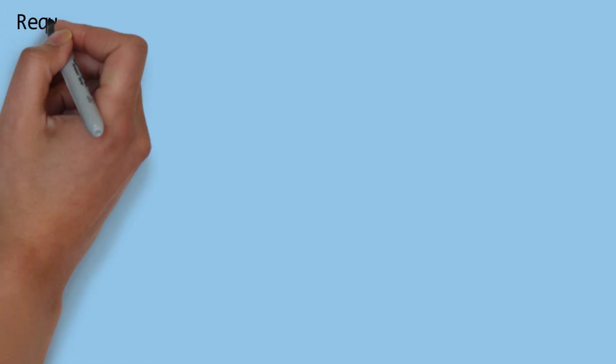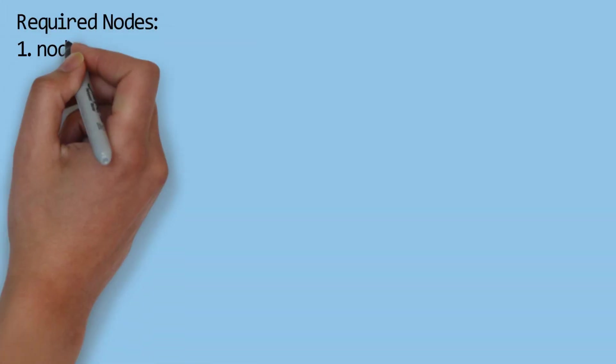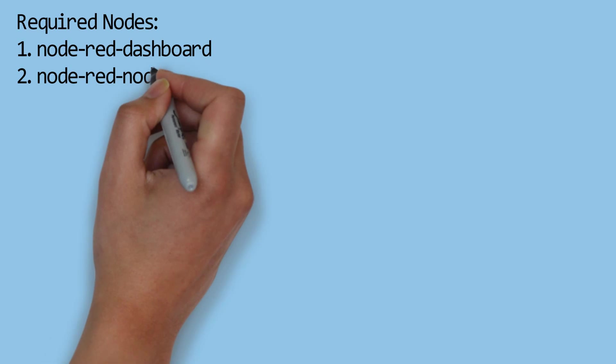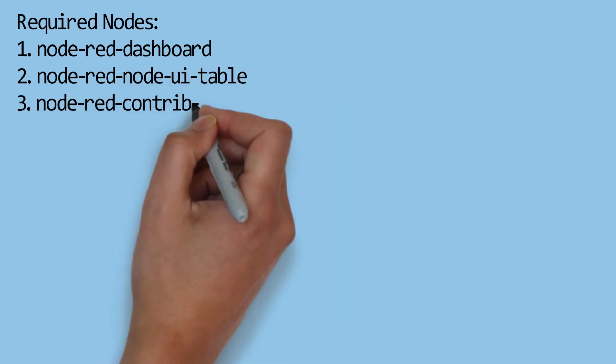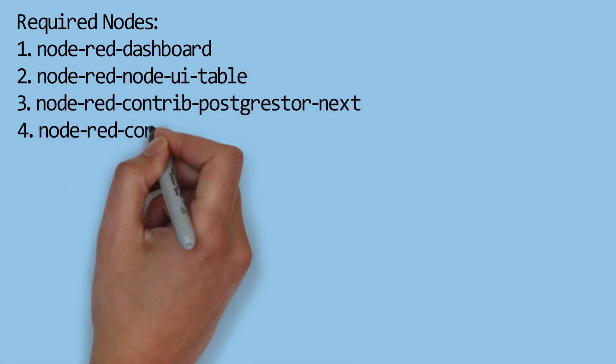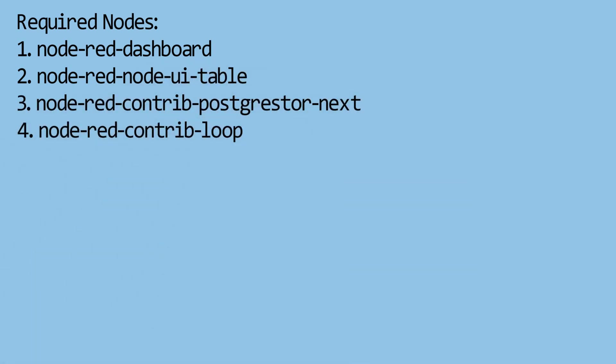Here are the required nodes used on the dashboard, such as the Node-RED dashboard, UI table, PostgreSQL node for database connection, and Contrib Loop for creating loops.